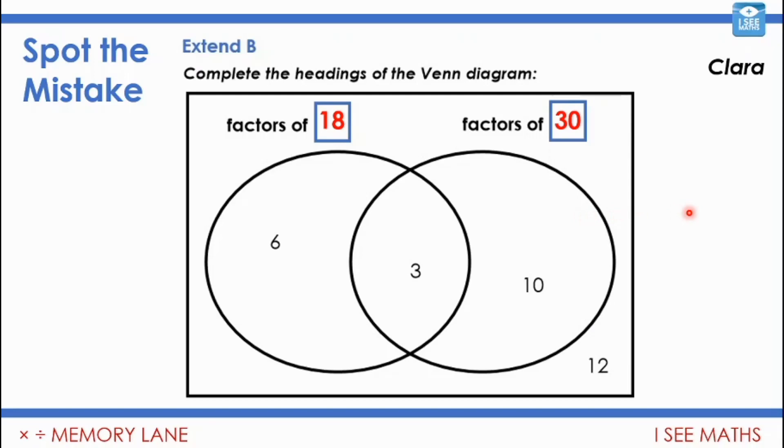I wonder if, like Clara, you can pause the video and find the mistake. Can you see which number I'd positioned incorrectly? Did you see that it was the 6? Because the 6 is a factor of 18, but it's also a factor of 30. So the 6 should have gone in here.